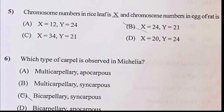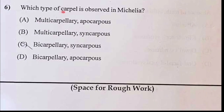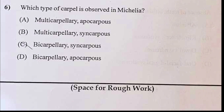Chromosome number in dyes leaf is equal to 24 and 21. Your answer is B — multicarpellary. The multicarpellary condition is observed in Michelia. Your answer should be multicarpellary and syncarpous.